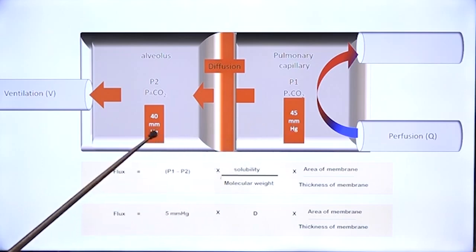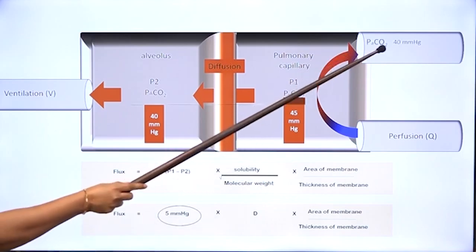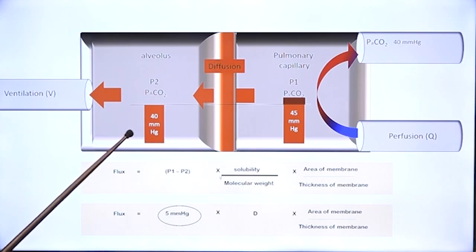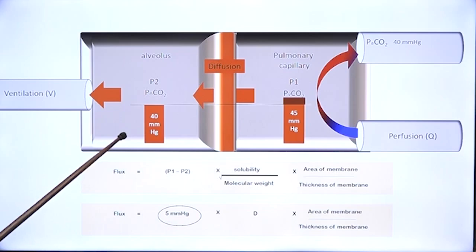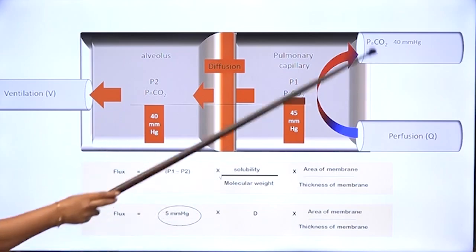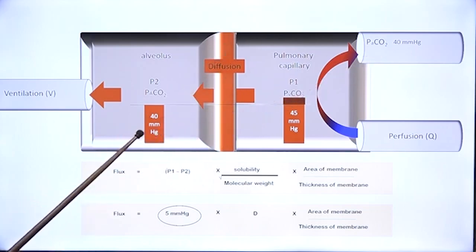We have seen that arterial carbon dioxide equals alveolar carbon dioxide in almost all clinical situations, except in extra-pulmonary shunt — the only condition where arterial CO2 will be higher than alveolar CO2. Otherwise, the two are equal, and this is a very important concept in respiratory physiology.